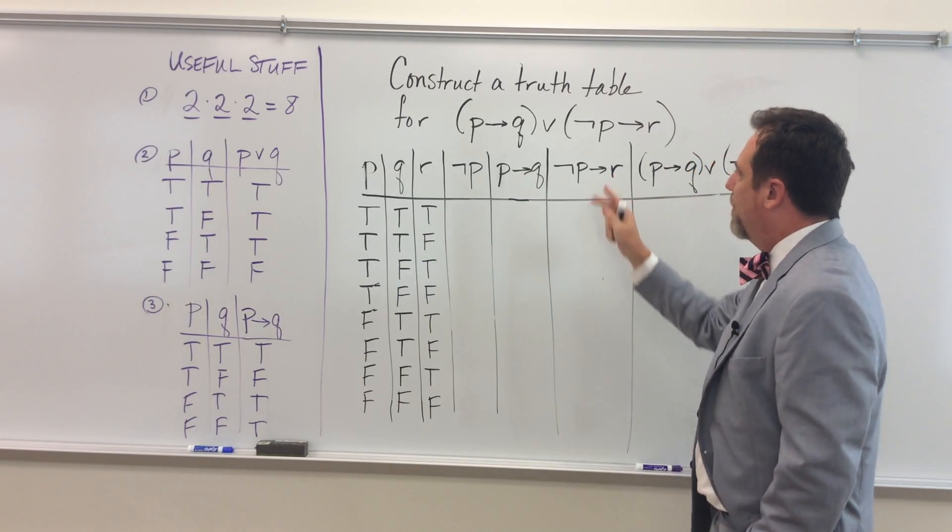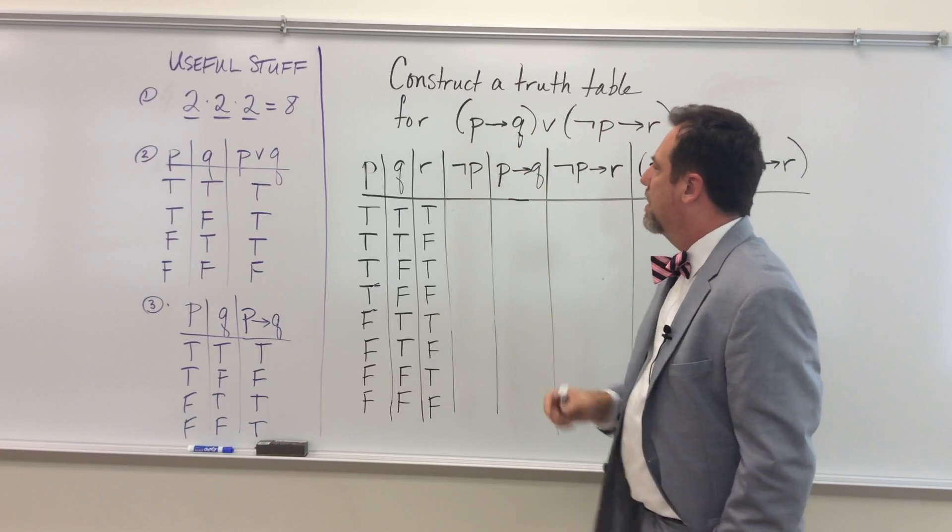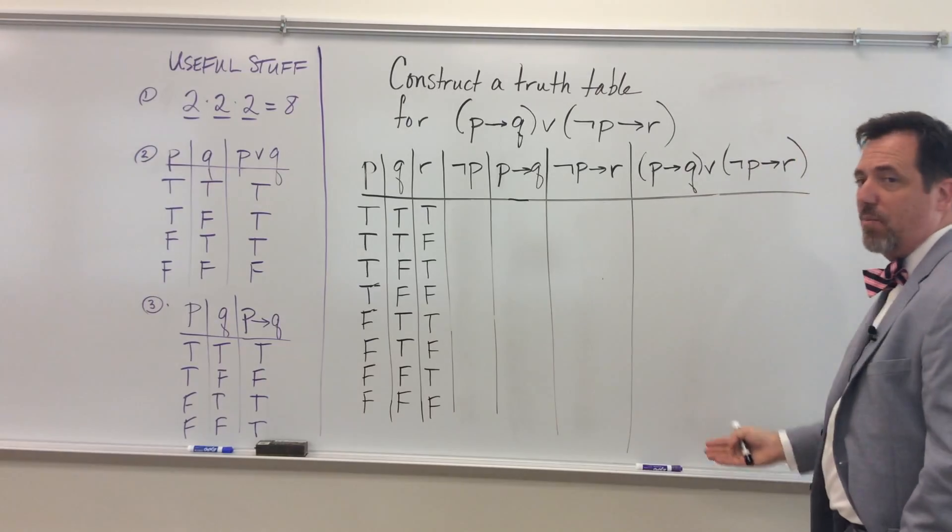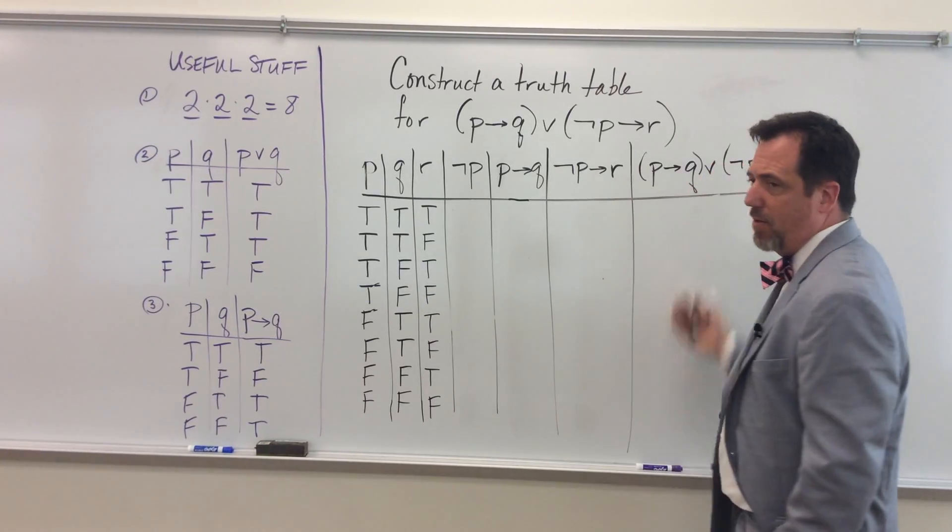Every component, every logical component of this compound proposition, I'm going to go ahead and make a column for. So it makes it easier for me to come up with a final column, which is what I'm looking for: truth value in the final column.